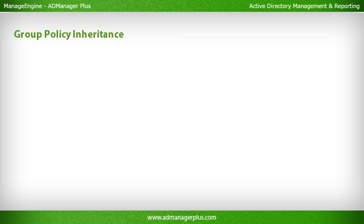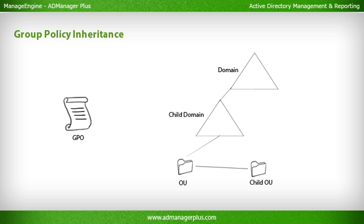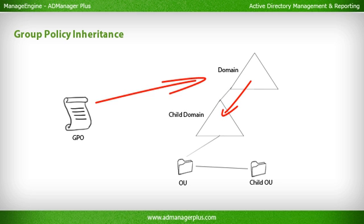Group Policy Inheritance — inheritance is the propagation of an object's properties and qualities to its child objects. For example, the properties, rights, and privileges of a group apply to all its members and child groups. Similarly, in group policies, a group policy applied to a domain will apply to all its child domains, the chain of their subsequent child domains, and all the OUs and their child OUs.